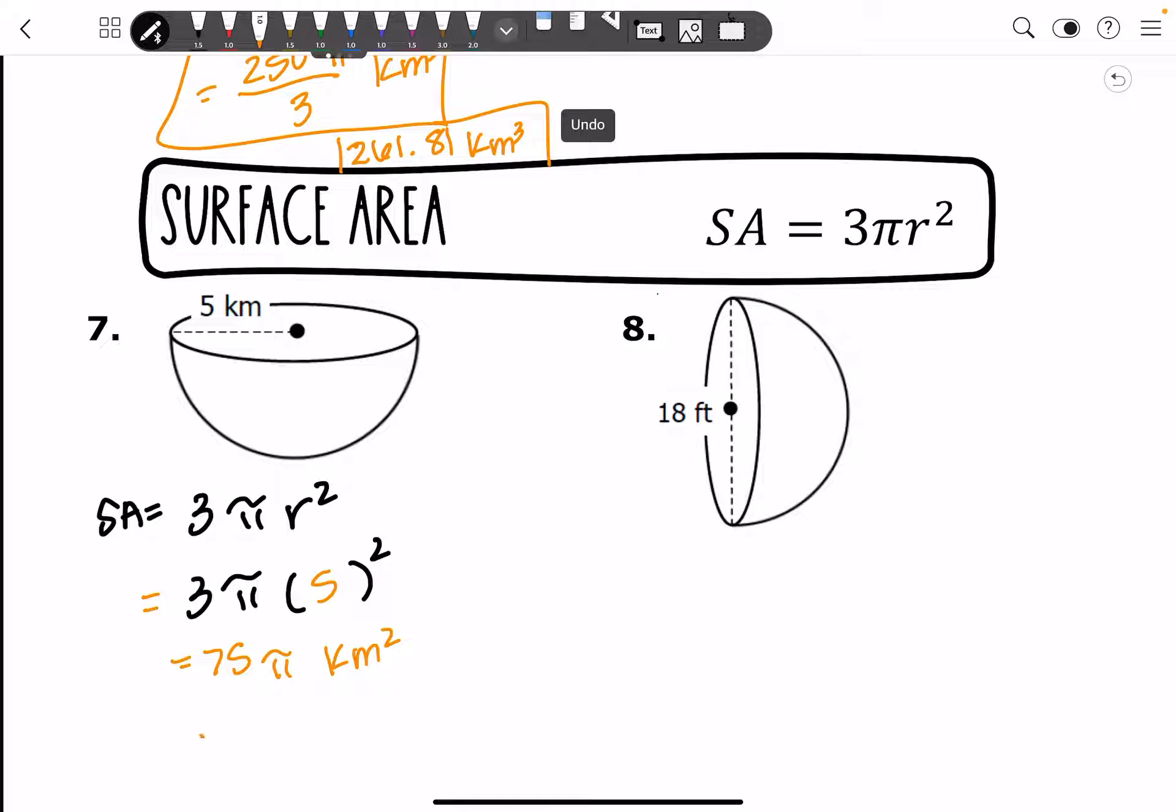And then your approximate is going to be 235.62 kilometers squared. So I want you guys to go ahead and try number 8. You're going to get a nice, pretty exact number again for the same hemisphere.